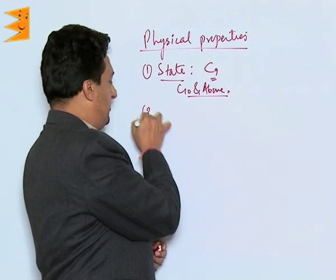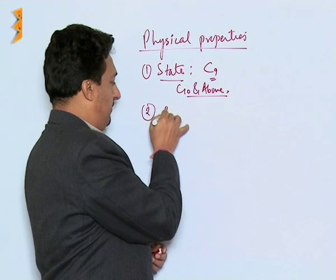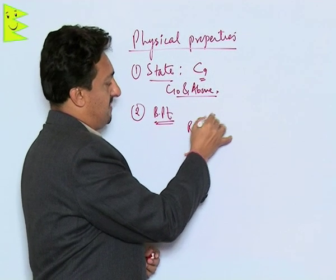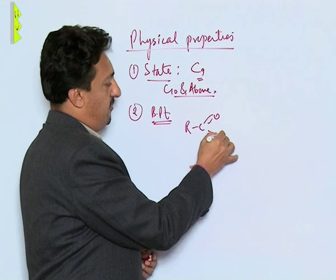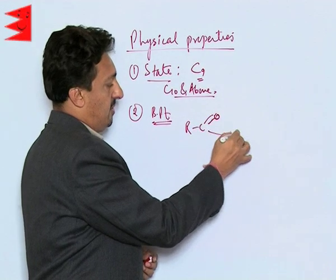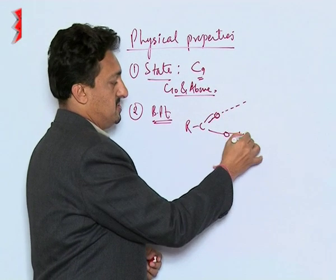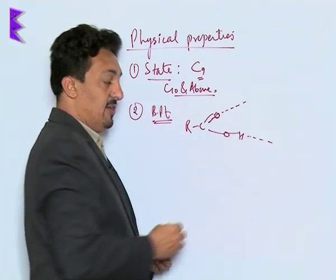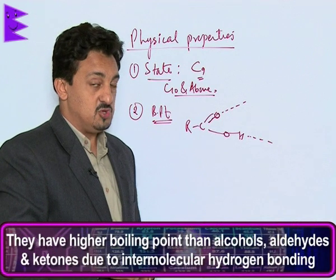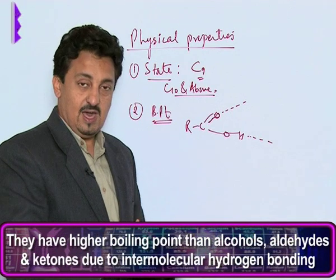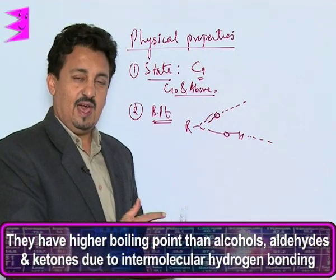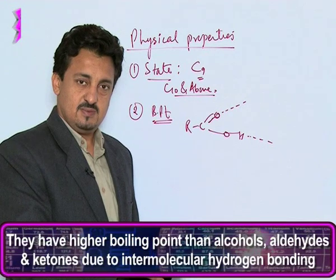Then let us move to their boiling point. Since carboxylic acids are able to form hydrogen bonding through two groups — from the oxygen as well as from the hydrogen — their boiling points are found to be very high, much more than their corresponding alcohols.